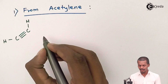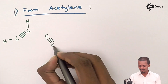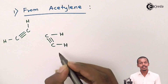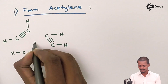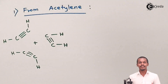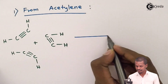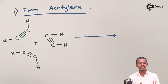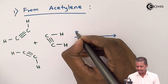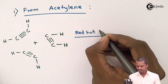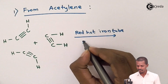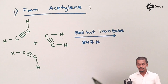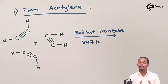We can write it showing the involvement of three acetylene groups combined together. We pass this acetylene gas — which is a gas — through red-hot iron, and we provide a temperature of basically around 847 Kelvin. At this high temperature, the polymerization will happen.